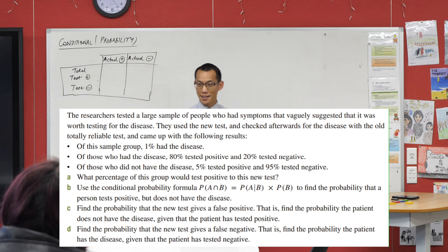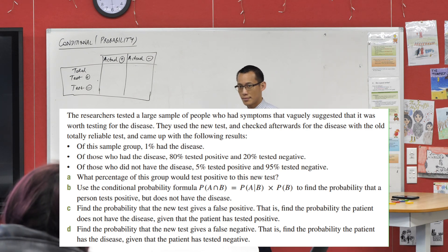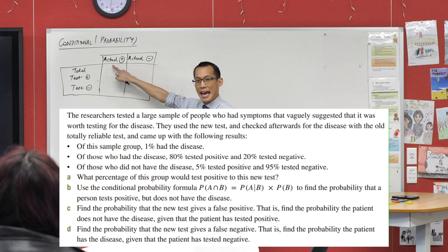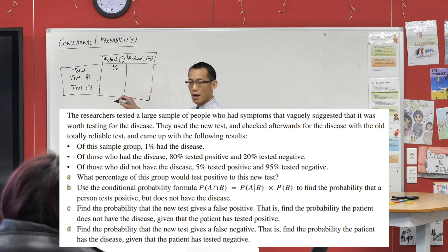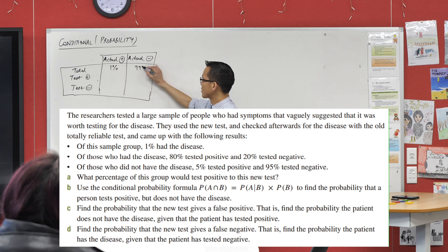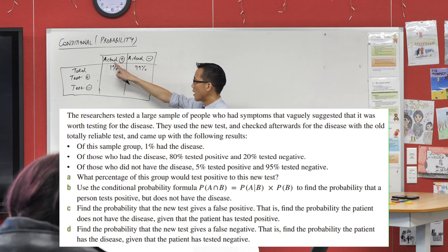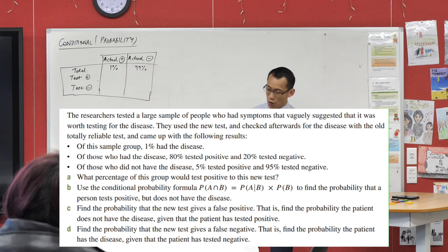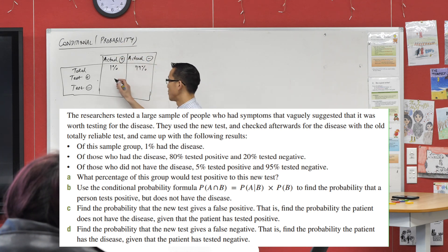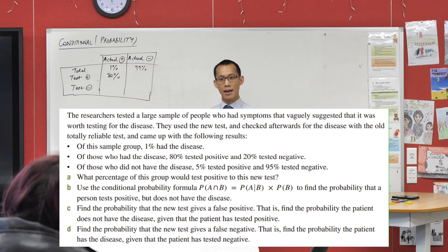How many people — what proportion of people actually get the disease? That's this group here: they're actually positive regardless of what the test says. That's 1% of the population and the other group is 99%. Thankfully, most people are healthy. When you look at the test results, if you have a look at the people who are actually positive, thankfully the test catches it most of the time — 80% of the time. If you're positive, the test will be correct and tell you you're positive.